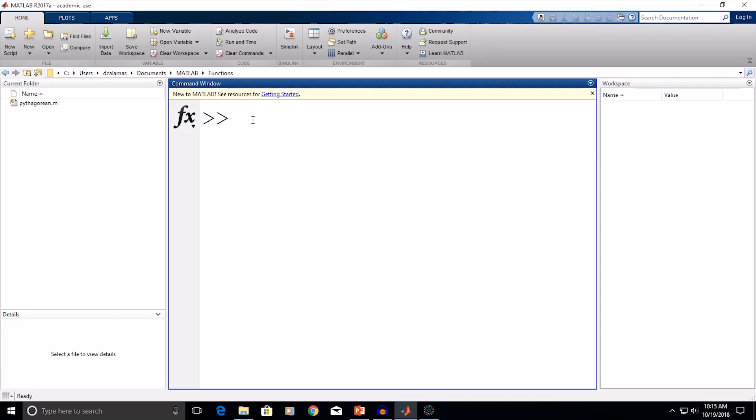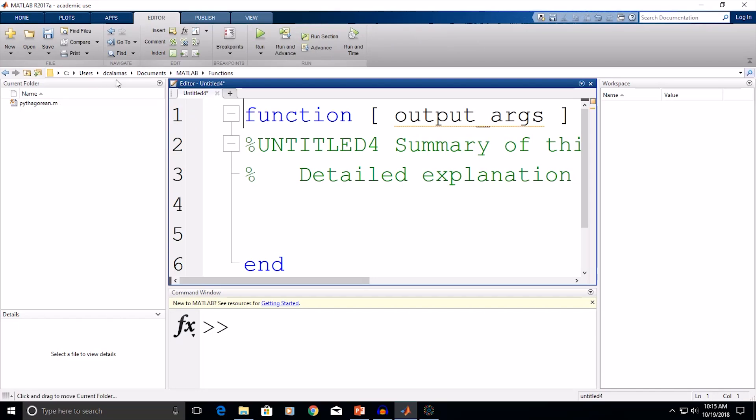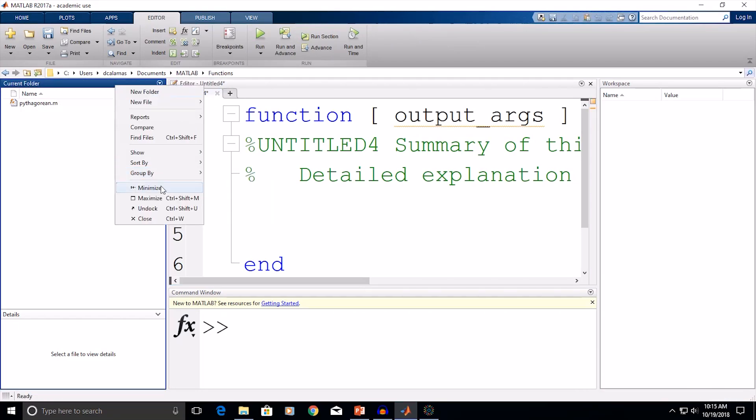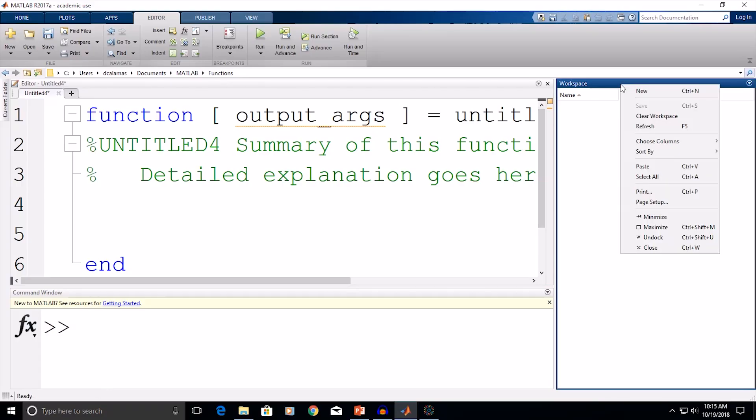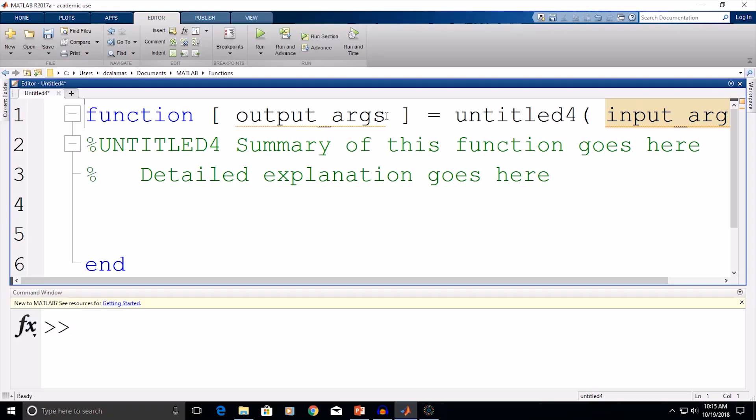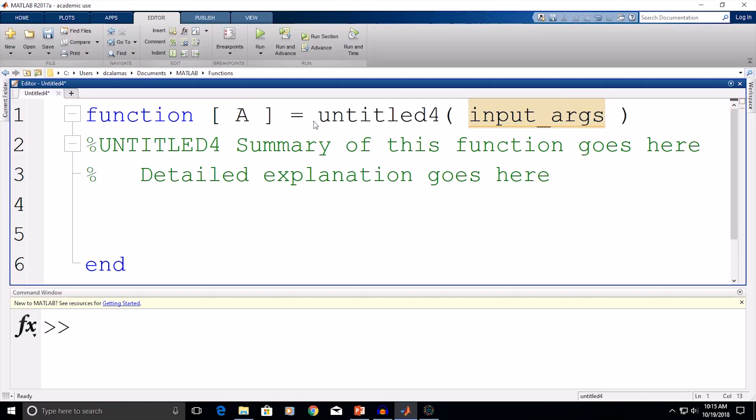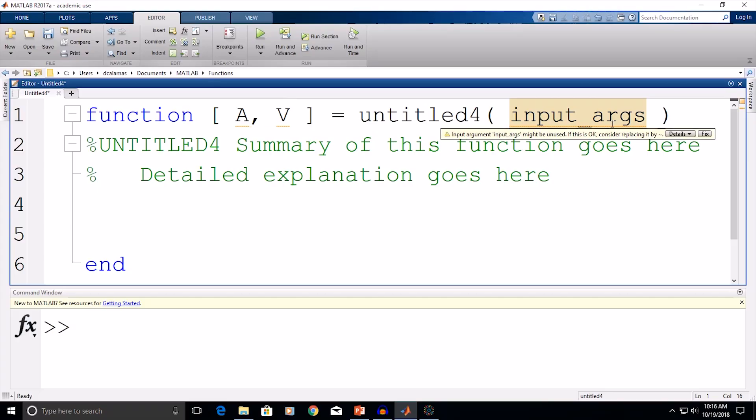So, again, we're going to start by creating a new function. We'll go to new, and then function again. I'm going to collapse the current folder and the workspace again to have a little bit more room to work with. Now, in this case, we have two output arguments, the area and the volume of the cylinder. So, I'm going to use A for area and V for volume. Our input arguments needed to calculate the area and the volume are the radius, which I'm going to use R, and the height, H.